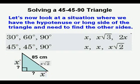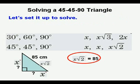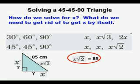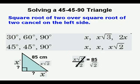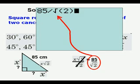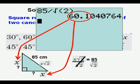Let's look at a situation where we have the hypotenuse or long side of the triangle and need to find the other sides. So here we have x square root of 2 equals 85 centimeters. We don't know x but we can see that x times square root of 2 equals 85 centimeters. So we set up the equation. How do we get rid of that square root of 2 to get x by itself? We're going to divide both sides by square root of 2. We go to our calculator: 85 divided by square root of 2 equals 60.1 rounded to the nearest tenth. And so those would be our sides.